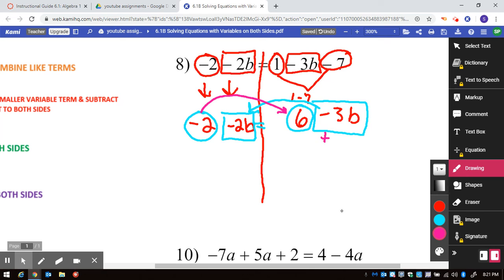I am going to add 3B and add 3B. So these equal 0. And minus 2B plus 3B, that's 1B.